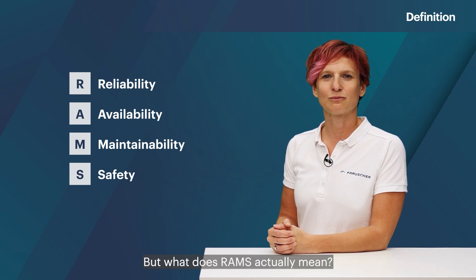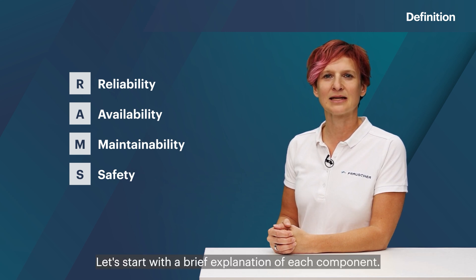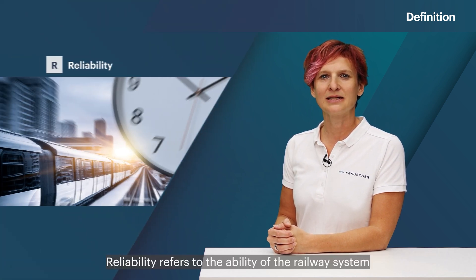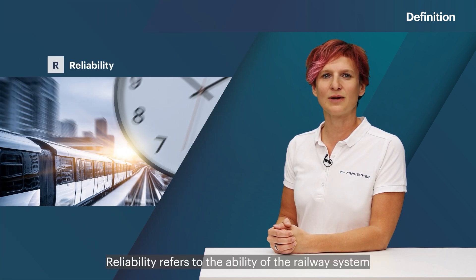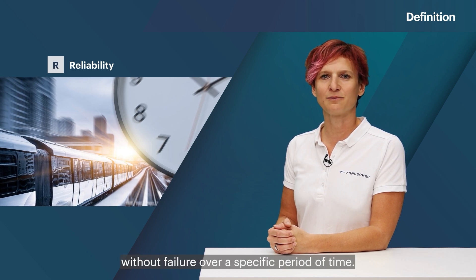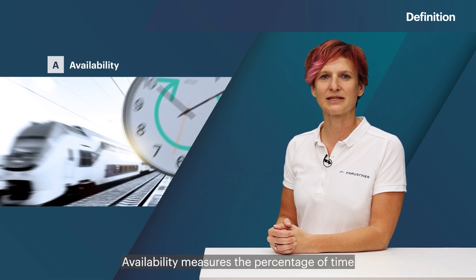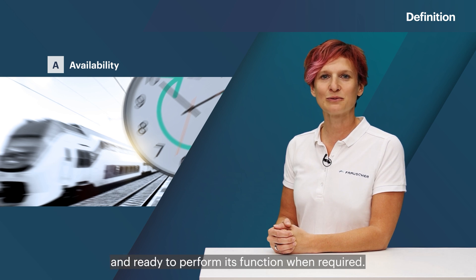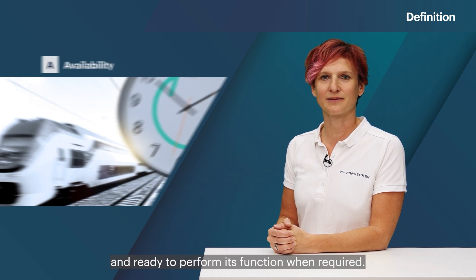But what does RAMS actually mean? Let's start with a brief explanation of each component. Reliability refers to the ability of the railway system to perform its intended function without failure over a specific period of time. Availability measures the percentage of time that the railway system is operational and ready to perform its function when required.